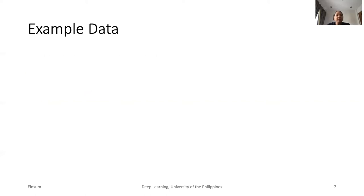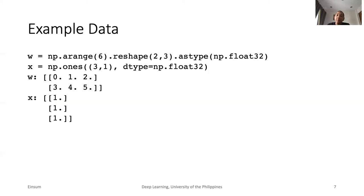Let us demonstrate EinSum. In this example, let us use NumPy to generate sample data. We have two tensors, W and X. W is made of values from 0 to 5, which is reshaped to size 2 by 3. Meanwhile, X is a 3 by 1 tensor with all elements equal to 1. To ease in visualization, we also show both W and X using the common linear algebra notation.